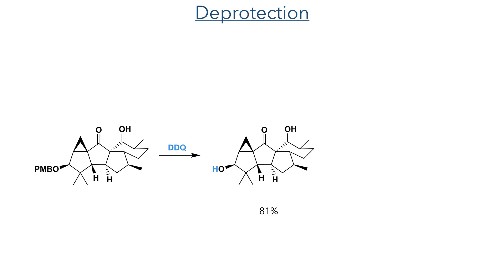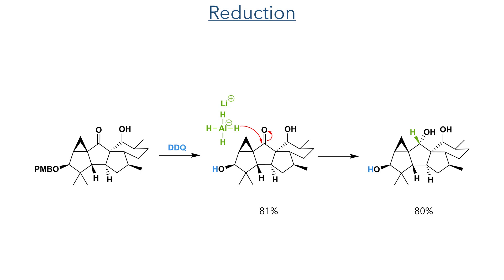With the framework now complete, the researchers entered the endgame of the synthesis and set about installing the correct functionality on this carbon framework. The PMB group was first removed using DDQ and then the carbonyl was reduced using lithium aluminium hydride, producing a single isomer in an 80% yield, likely guided by the inaccessibility of one side of the molecule due to its concave shape.